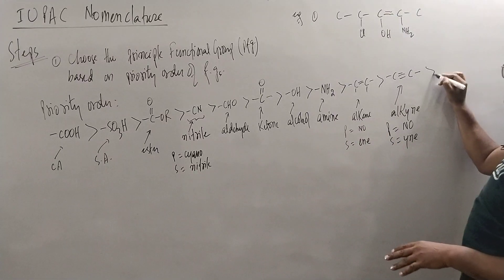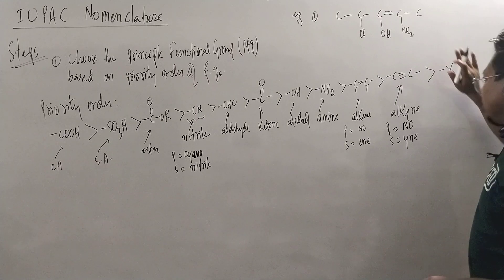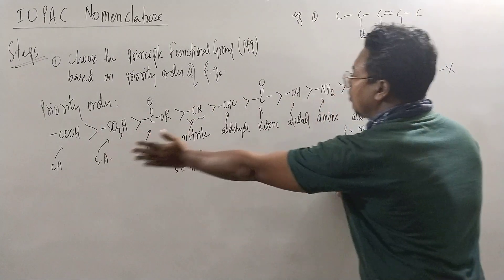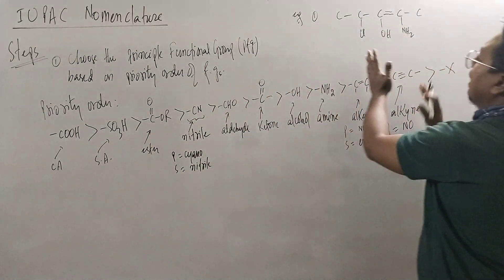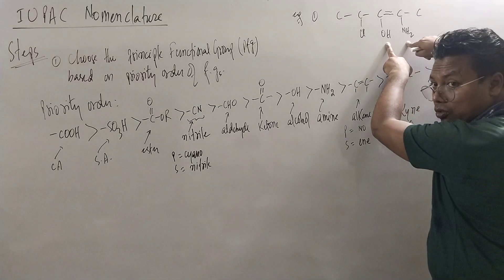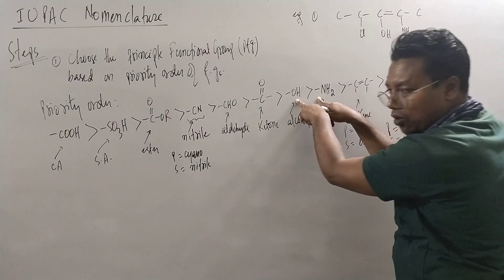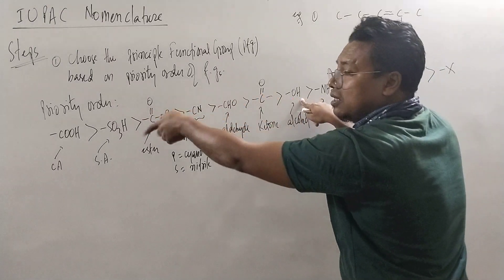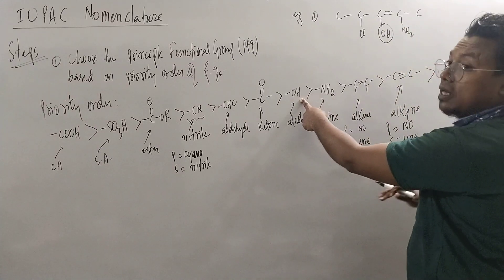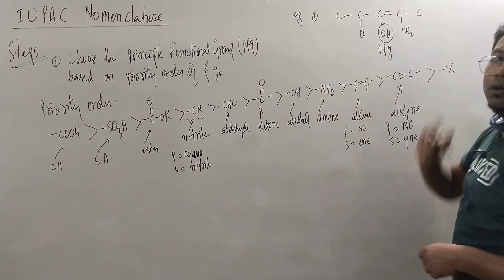If you have these products, that will not be very appropriate, then you have to get those products. The priority order should be used to get those products. If you have alcohol or amine, then they will get those products. After the priority order, this OH which comes first in the priority order is our Principal Functional Group.